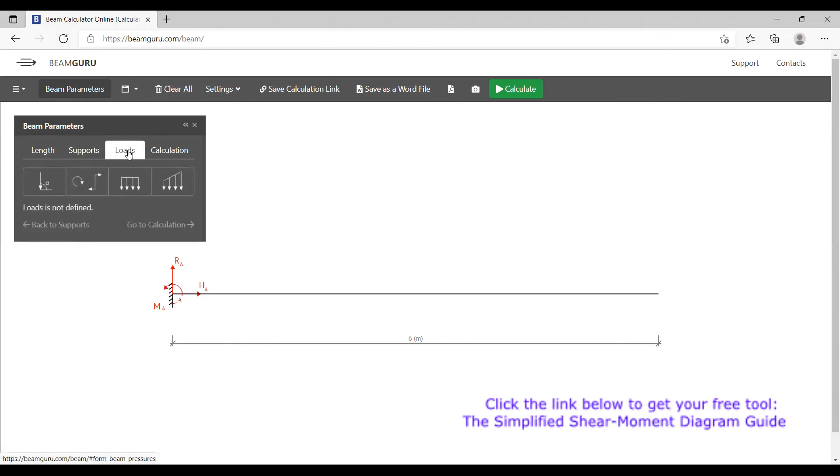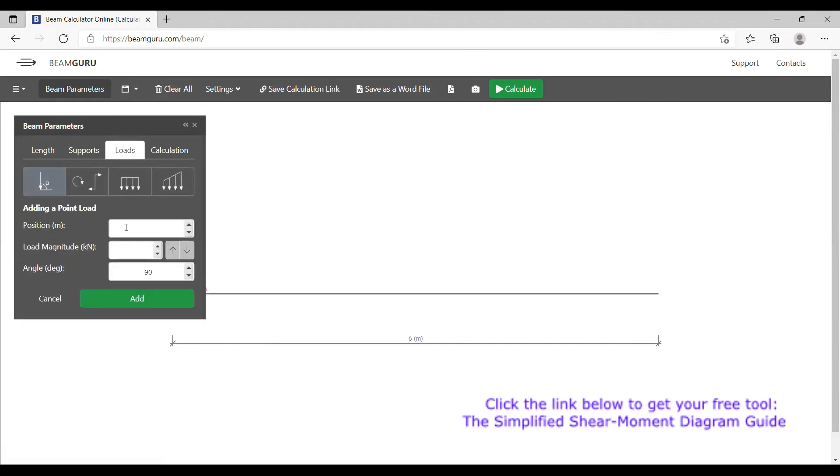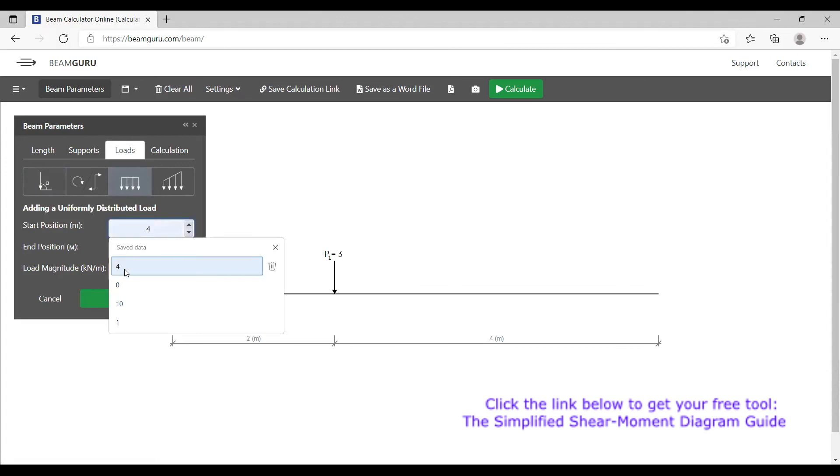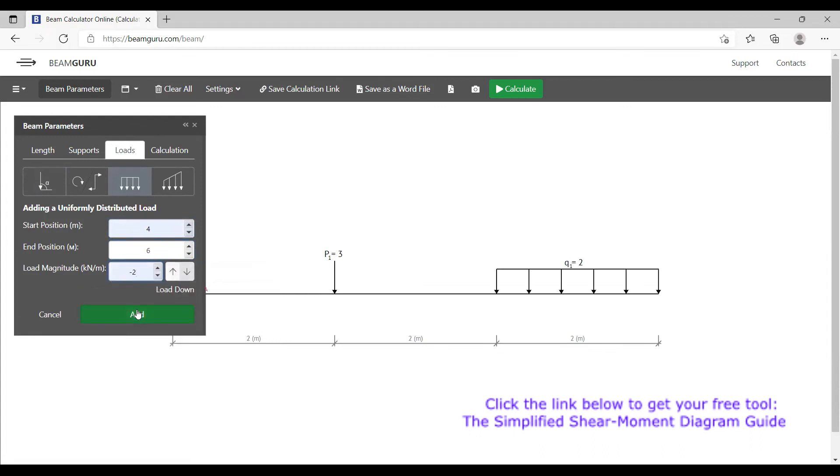Now we go with the loads. We have a point load of 3 kilonewtons. The position was at 2 meters from the left, with a value of 3 kilonewtons going downwards. Next we add our uniformly distributed load. The starting position is at 4, ending position is at 6, and the magnitude was 2 kilonewtons going downwards.